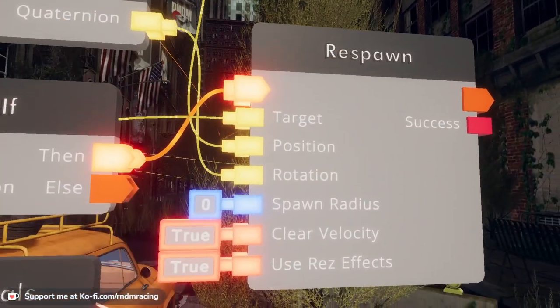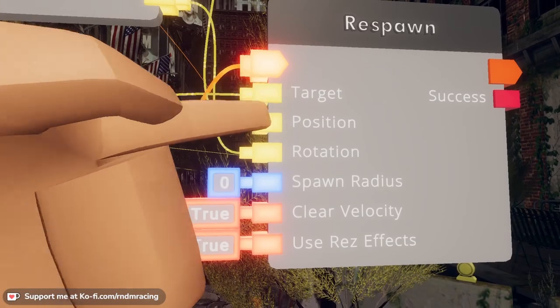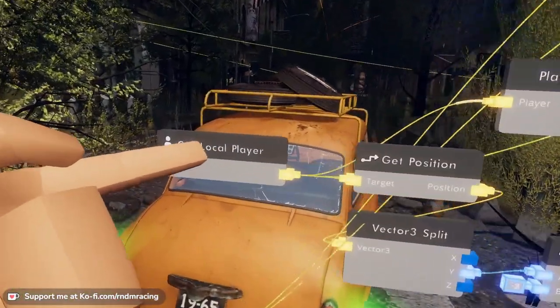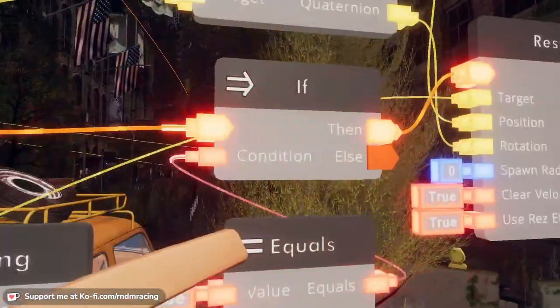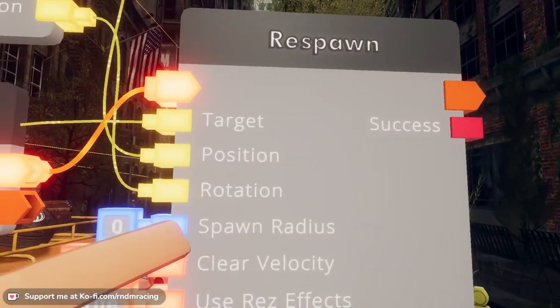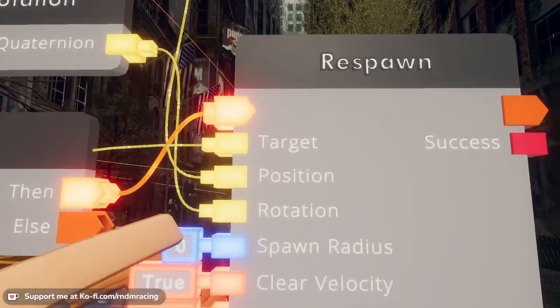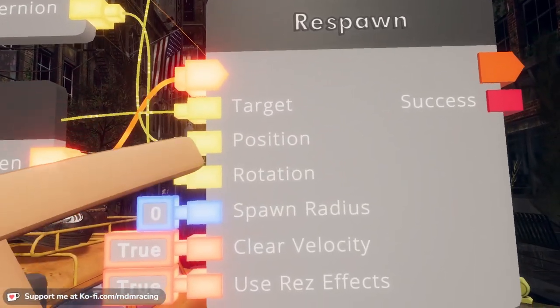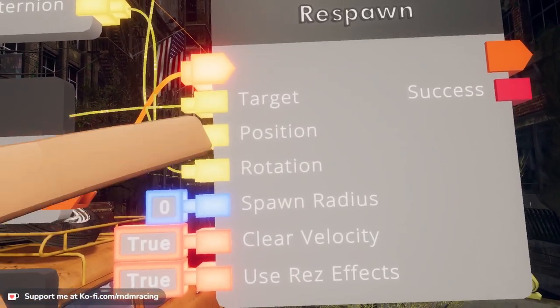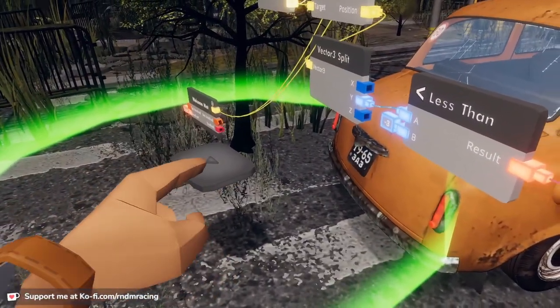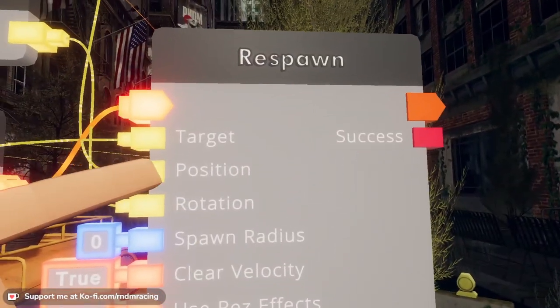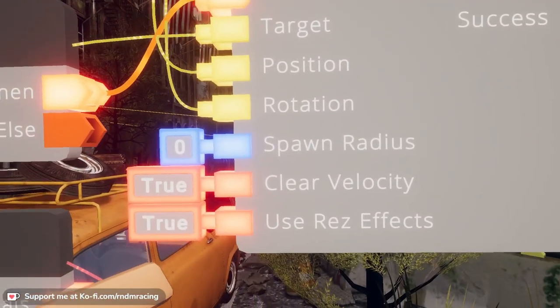So who are we respawning? The target of the respawner? Well, the local player, of course, because this is running for everybody, so you want the local player to be the target. Now we're going to need those position and rotation, because that's going to tell us where to respawn to. The position and rotation we grab from that welcome mat over there—those are where we want to be respawned at.